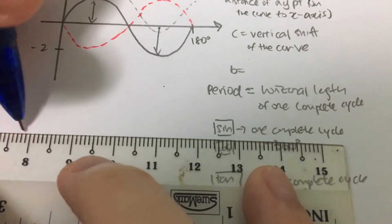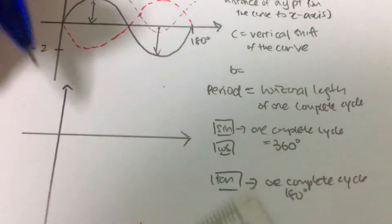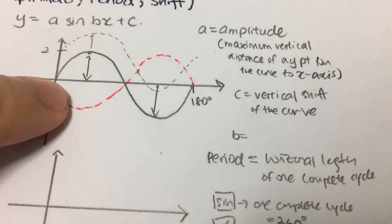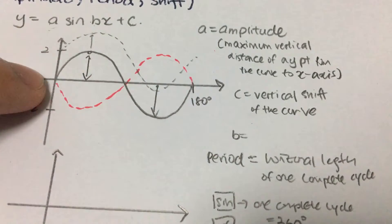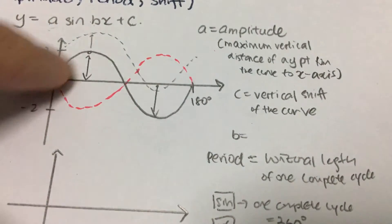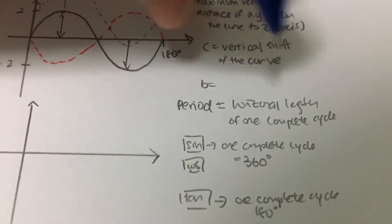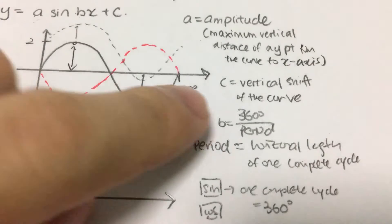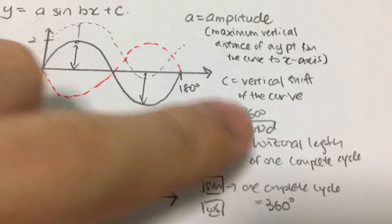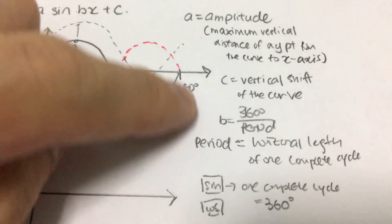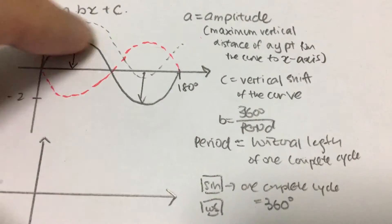So let's see, for example, if we are given this particular question, what is my period? So basically my period itself is 180. And in order to find b, so b itself is basically 360 over period. So in this case the period is 180, which is the one complete cycle in horizontal length. So b is basically 360 over 180 and that will give us 2.